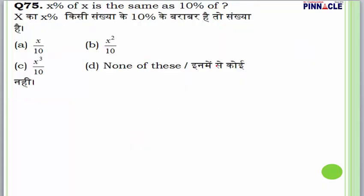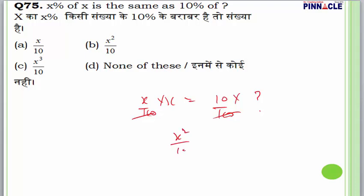Question 75: If x% of x is the same as 10% of y, then x²/100 = 10y/100, so y = x²/10. Answer is B. In this presentation we have covered questions from 51 to 75. Thank you very much for watching.